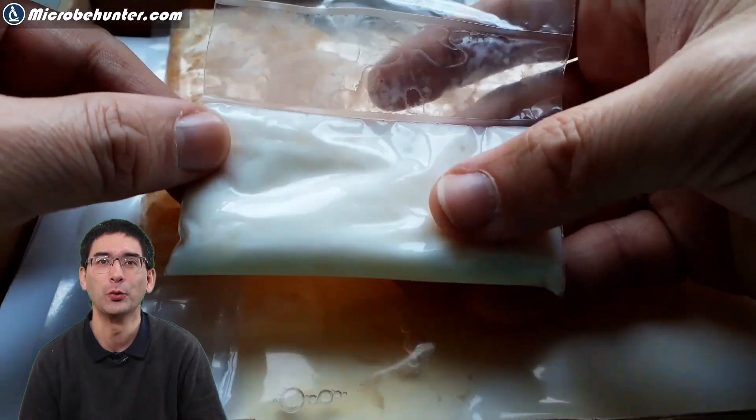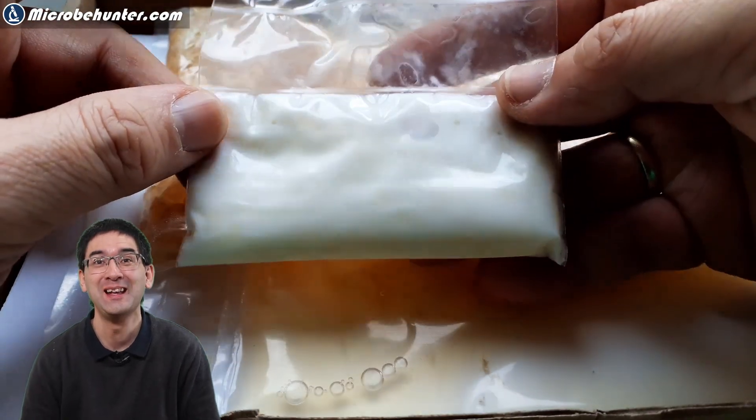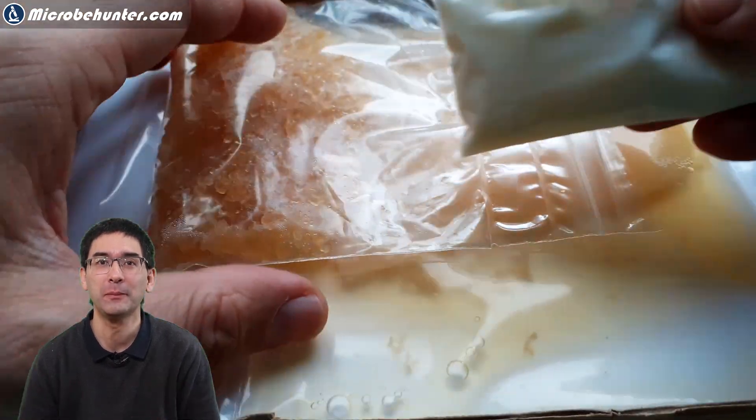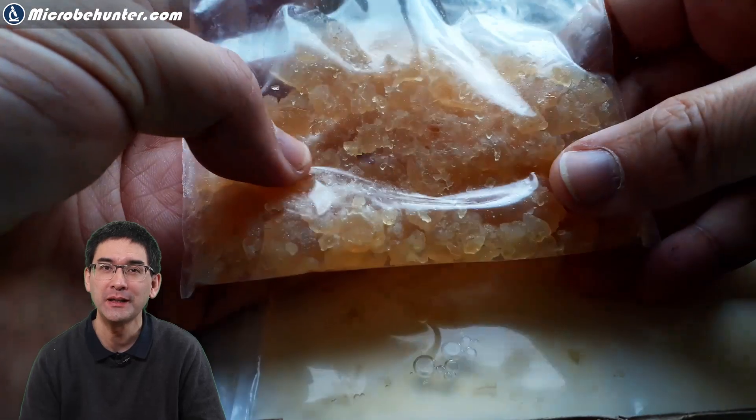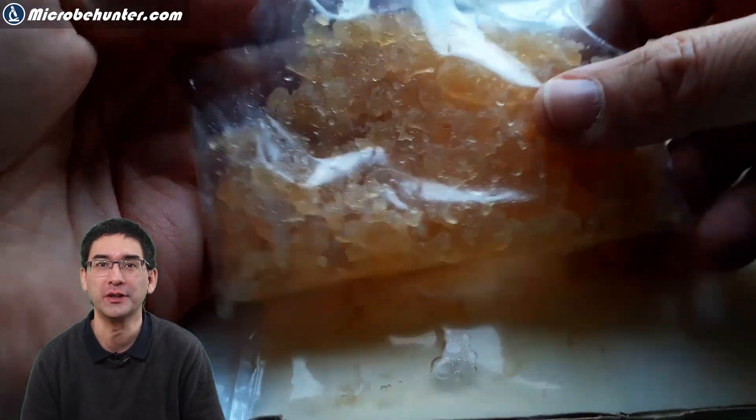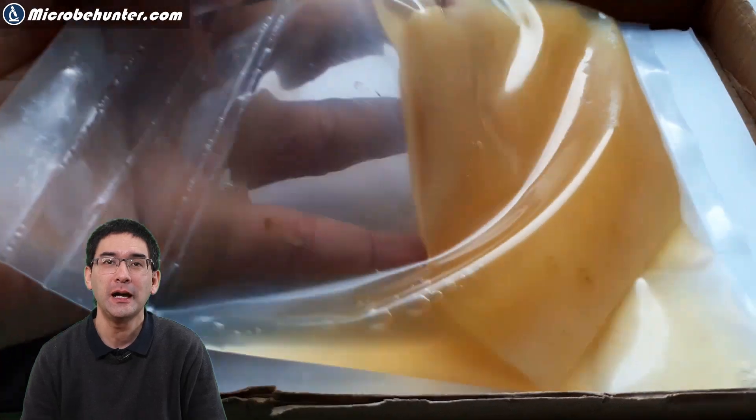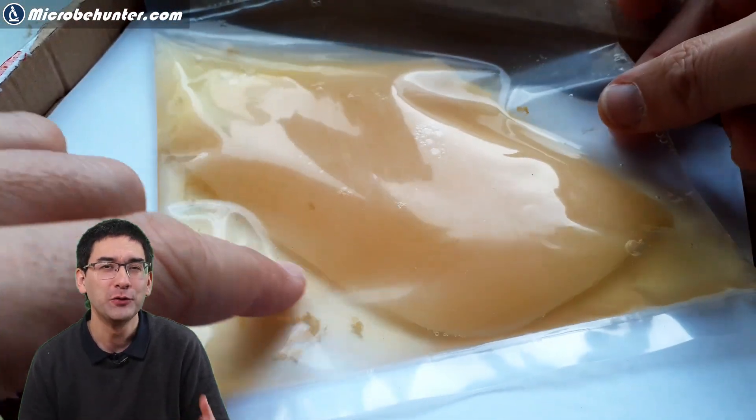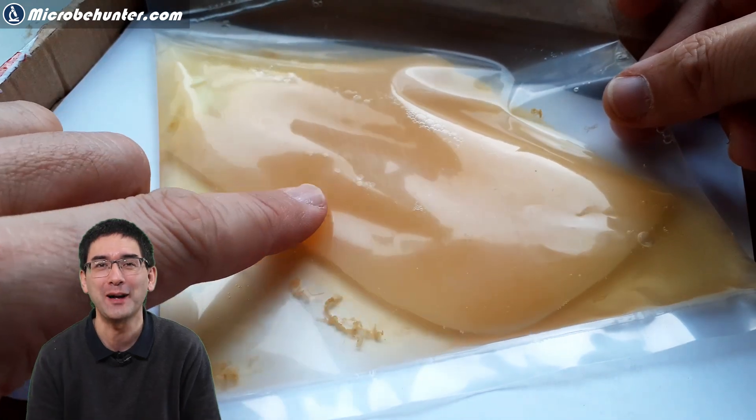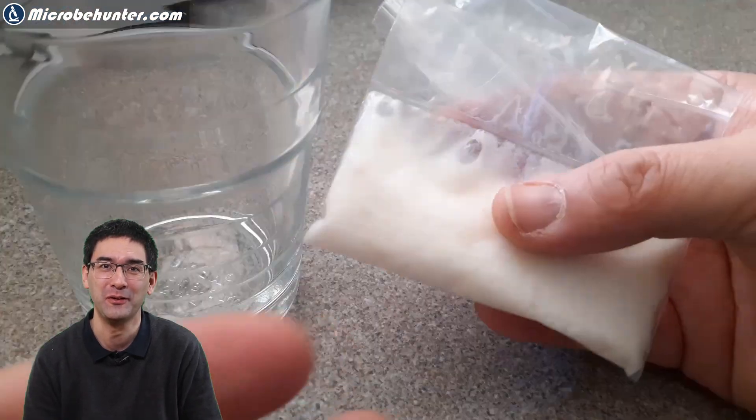The kefir grains I ordered online, of course. I did not only order milk kefir, but also water kefir - you have to add some dried fruits and sugar to it - and also kombucha. That's this large fungus that you see over there. Kombucha is essentially fermented tea. I have not tried it yet, but I'm going to try it and make a separate video of this.